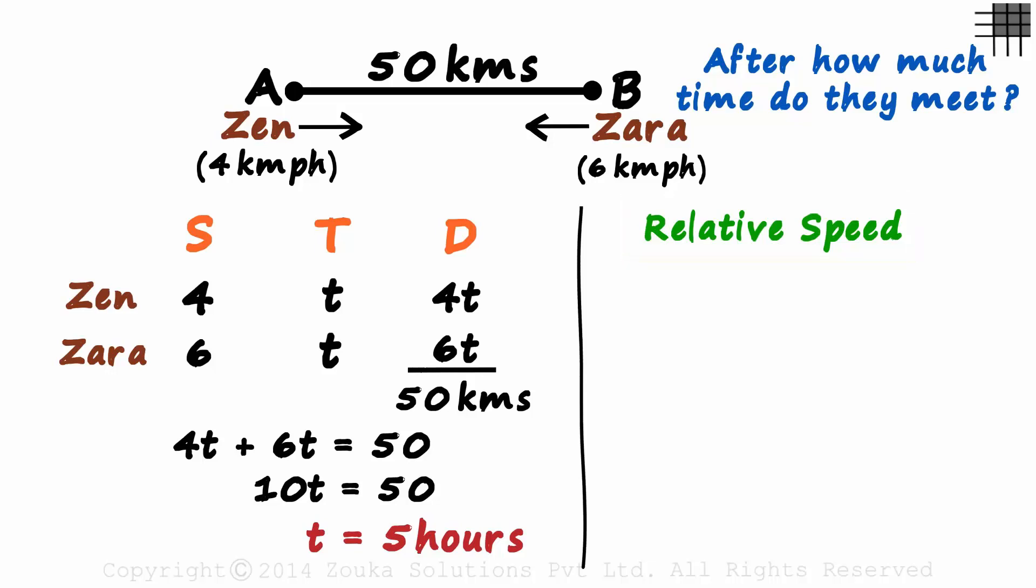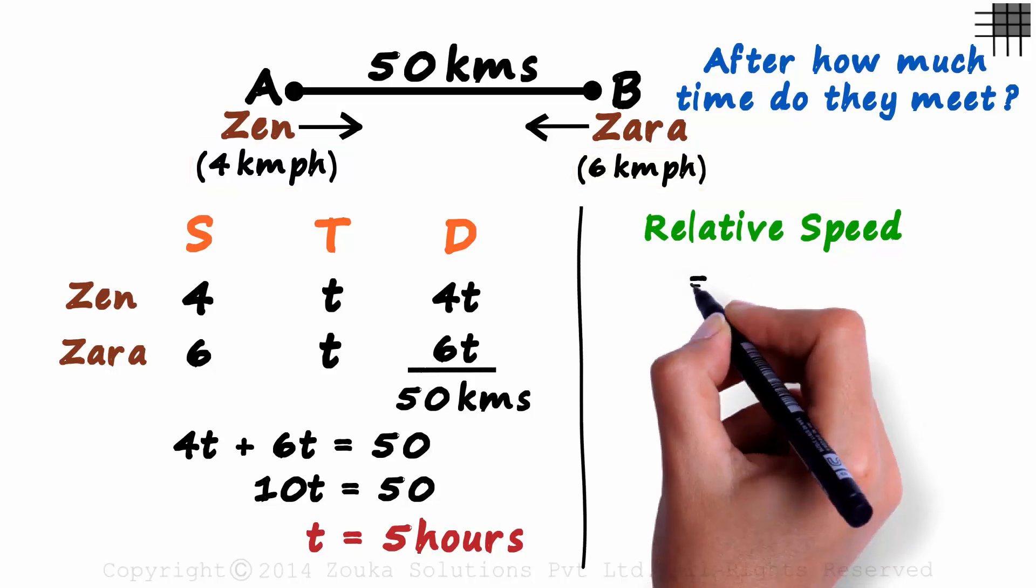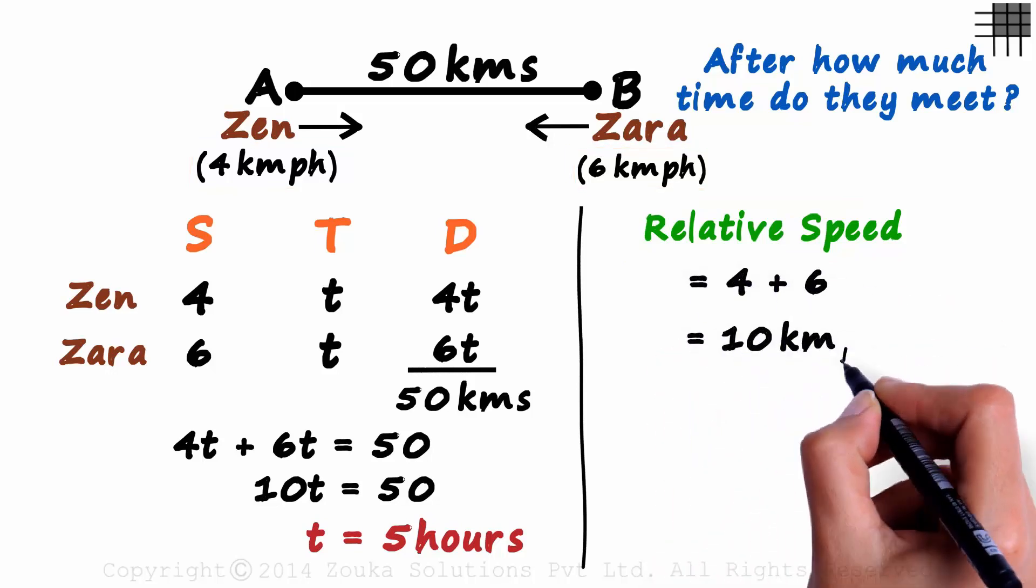In the previous session, we had seen that when two objects are moving towards each other, the relative speed is the sum of the individual speeds. So here, it will be 4 plus 6 which equals 10 kilometers per hour.